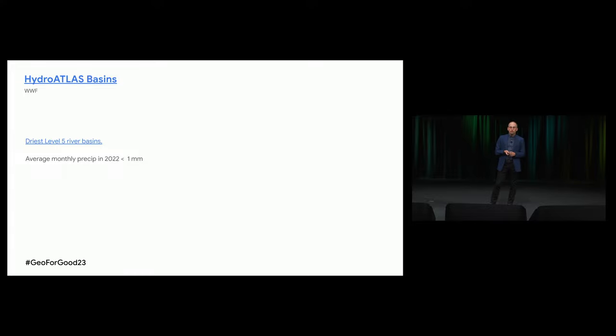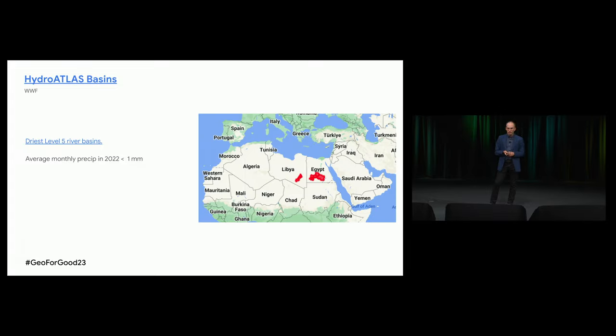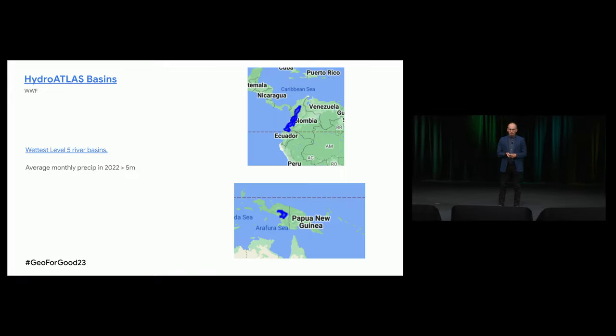HydroATLAS basins were also highly requested. We had Level 12 HydroATLAS basins before — the most detailed ones — and we added the rest of the levels. Looking at the driest Level 5 river basins with precipitation below one millimeter per month, unsurprisingly they're in deserts. The wettest basins, with precipitation over five meters per month on average — this year they were in Colombia and in the Indonesian part of Papua Island, both in the tropics.